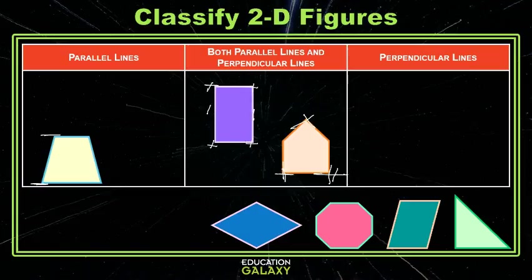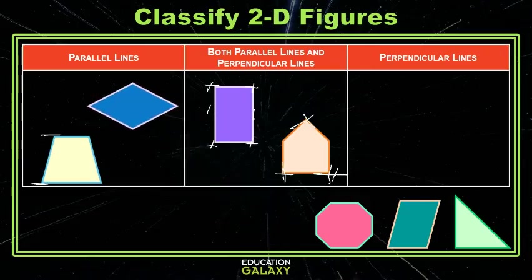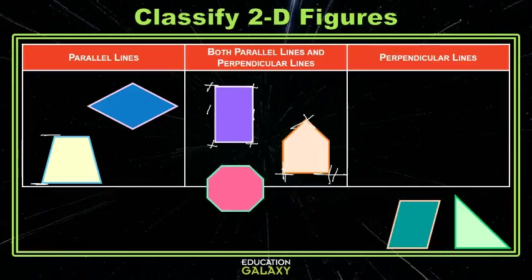The parallelogram that is next has two sets of parallel sides. I don't see any right angles, so no perpendicular lines. So he just goes in our parallel lines section. The octagon appears to have several pairs of parallel sides, but no right angles and no perpendicular lines.